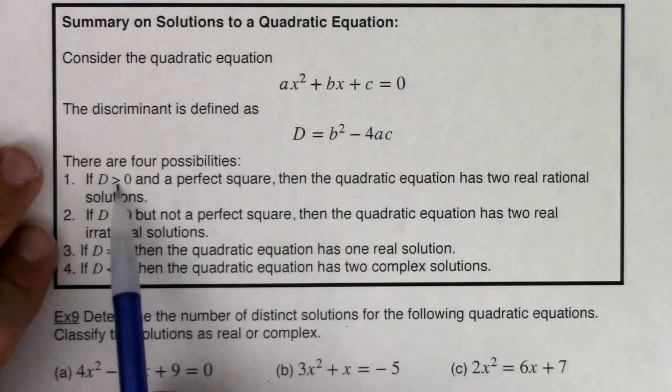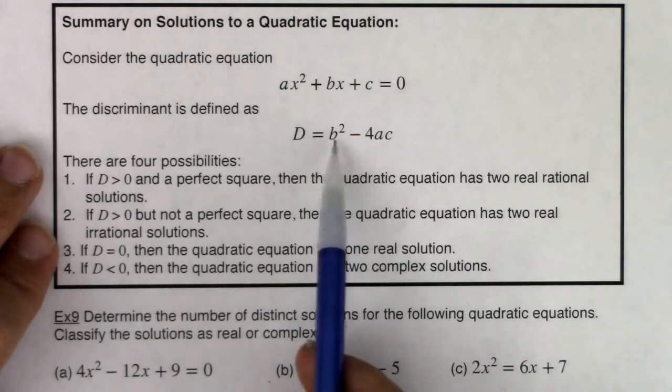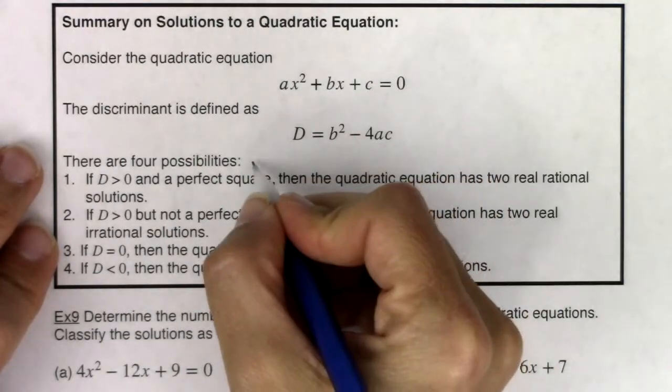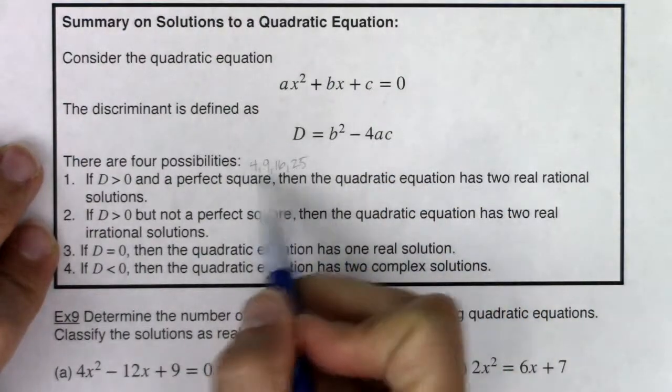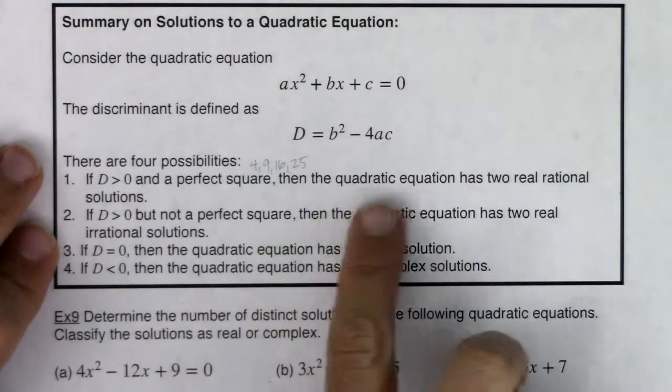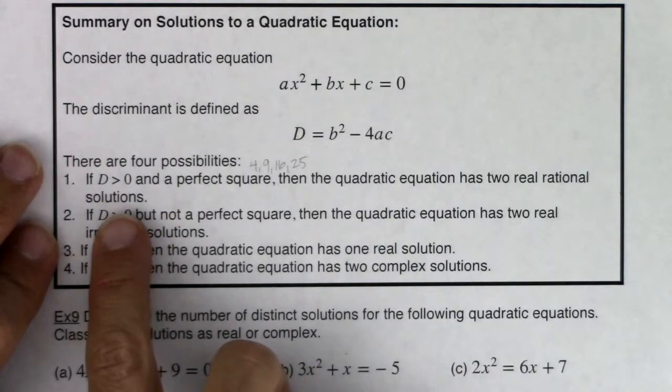There are four possibilities. If d is positive and a perfect square, meaning your discriminant is 4 or 9 or 16 or 25, anything that's a perfect square, then the quadratic equation will have two real rational solutions.